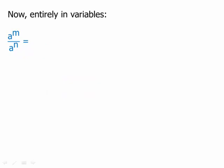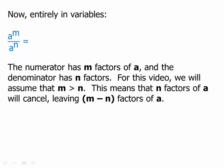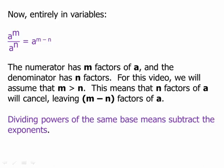Now we can do that entirely in variables. We have a to the m divided by a to the n. This is a fraction — in the numerator we have m factors of a, in the denominator we have n factors. Again we assume m is greater than n, so all those factors in the denominator will cancel. When we take the m factors in the numerator and remove the n factors that cancel, we're left with m minus n — and that's going to be the exponent of a. That is our second law of exponents: when we divide powers of the same base, we subtract the exponents.